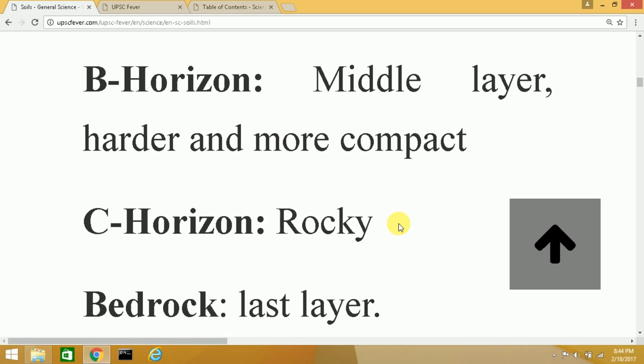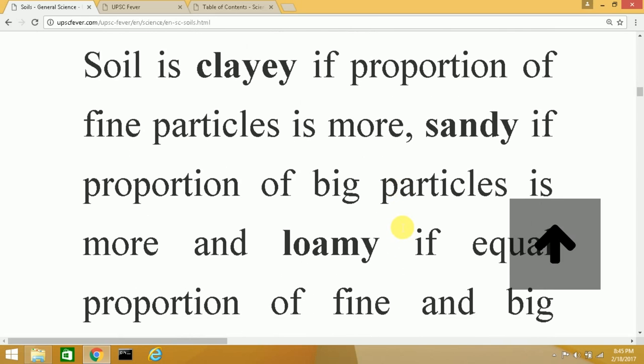Soil contains three types. If there is a high proportion of tiny, minute, or fine particles in the soil, then we say that the soil is clayey in nature. If there is a high proportion of big particles in the soil, then we say that the soil is sandy in nature. And finally, if the composition or proportion of big and small particles is equal, then we say that the soil is loamy soil. Now, loamy soil is considered best for plant growth.